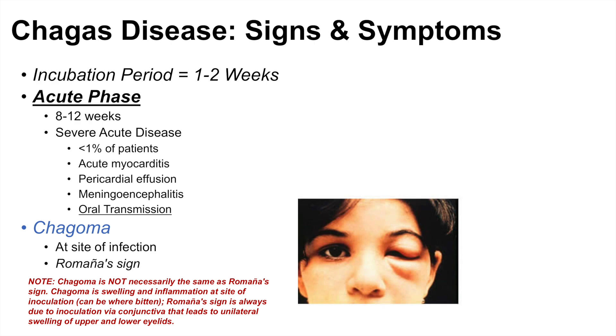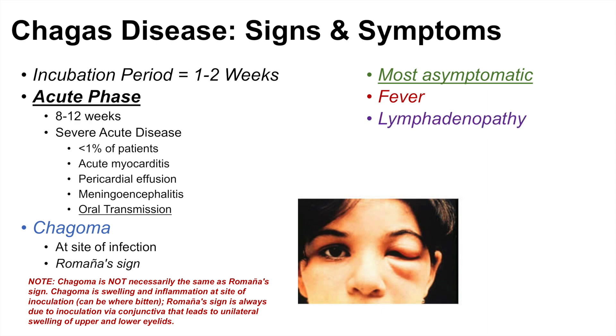Other than that, most individuals during the acute phase are asymptomatic. Some patients experience nonspecific symptoms such as fever, lymphadenopathy, myalgia, and headache — so it feels like a general illness. Once we pass the twelve-week mark of the acute phase, we enter the chronic phase of Chagas disease.